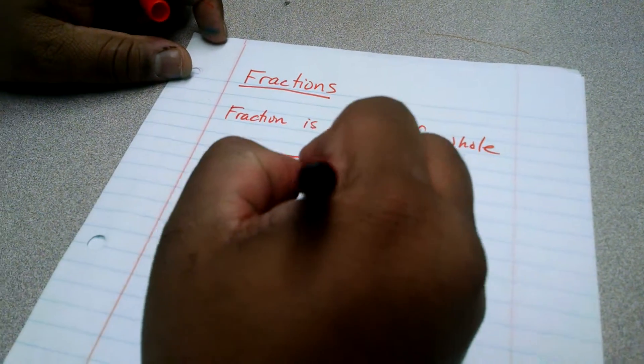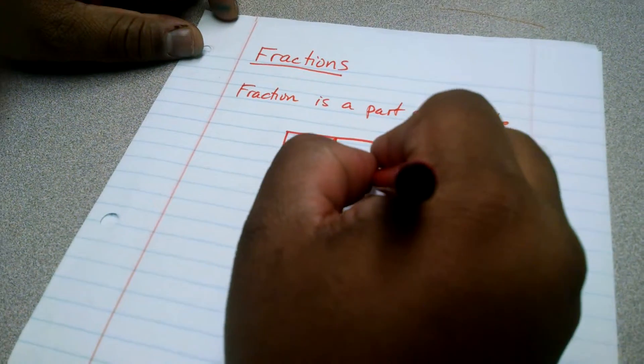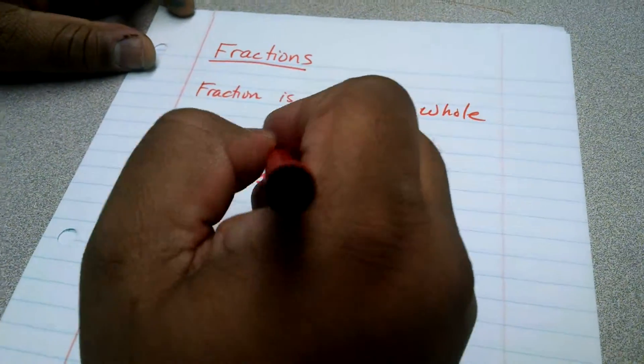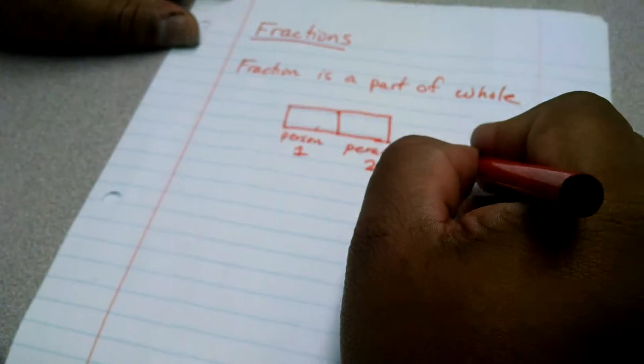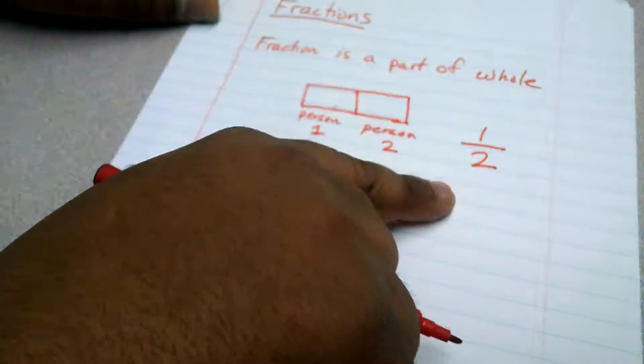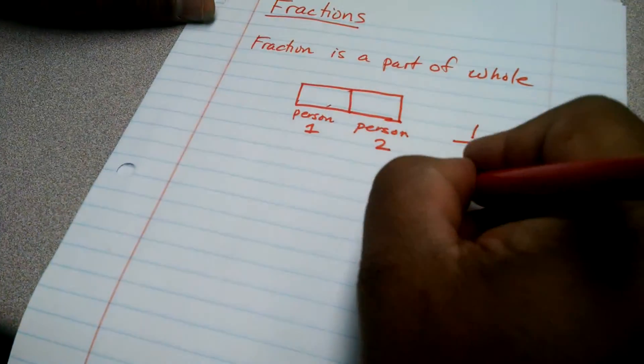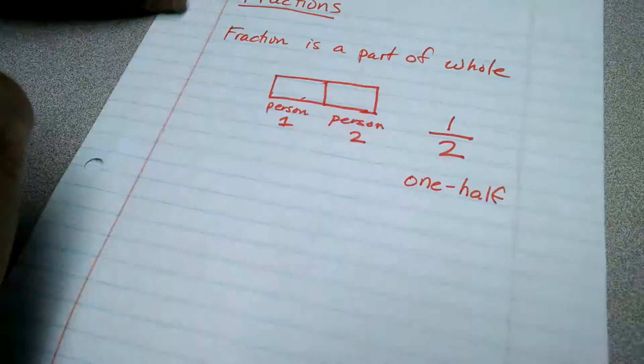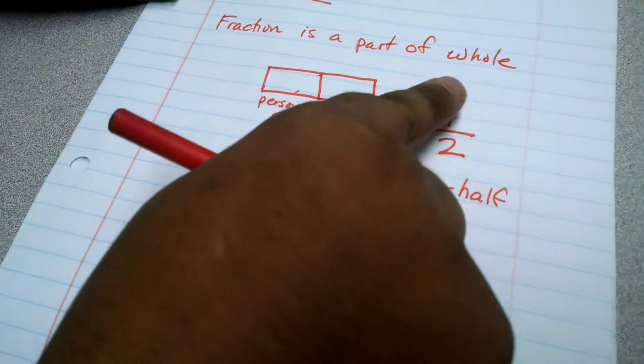person two will get this brownie, and each person will get one out of two pieces. So we write that as one over two, or one-half. Part over the whole: two parts make up the whole, one part